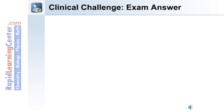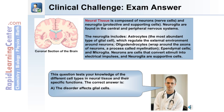Here's the answer to the question. This question tests your knowledge of the different cell types in neural tissue and their specific functions. The correct answer was A: the disorder affects glial cells. Although myelination is performed by neuroglia cells, it is actually performed by oligodendrocytes, not astrocytes.